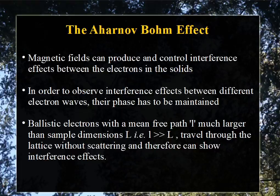The Aharonov-Bohm effect is observed in ballistic transport regions. What is a ballistic transport region? Consider a channel where the channel length is less than the mean free path — there will not be any scattering. Mean free path is the average distance between two successive collisions of electrons. If the transport region is ballistic, there will not be any scattering.